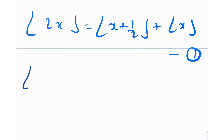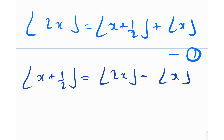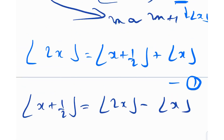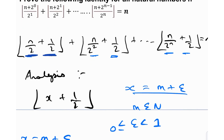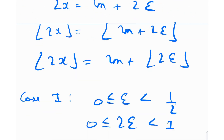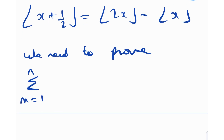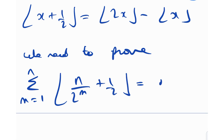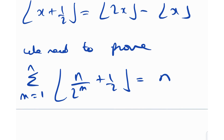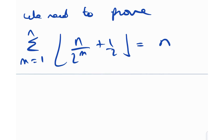Equivalently, floor(x + 1/2) = floor(2x) − floor(x), which looks much more aesthetically pleasing. Now, looking at the question — each term has some quantity x plus one half, and we need to prove the sum equals n. We can now use telescoping. In summation form, we need to prove: Σ (m = 1 to n) floor(n/2^m + 1/2) = n.